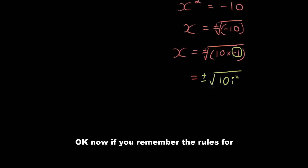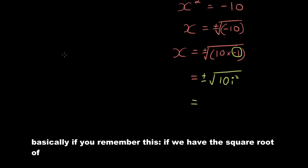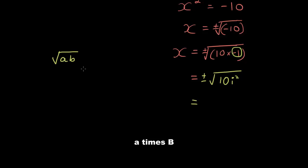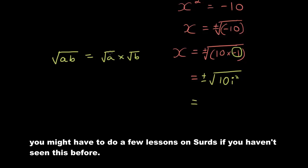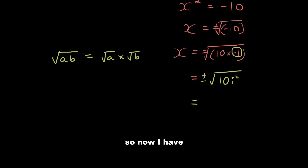Now if you remember the rules for square rooting numbers. Basically, if you remember this, if we have the square root of a times b, that's the same thing as the square root of a times the square root of b. You might have to do a few lessons on surds if you haven't seen this before.